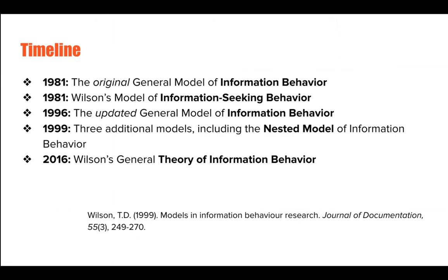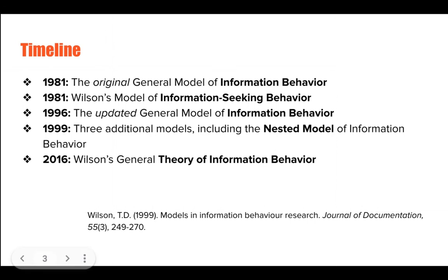Wilson has been continually developing multiple models related to information behavior, and it can get a little confusing if you aren't familiar with them already. In 1981, Wilson published the original general model of information behavior in the paper 'On User Studies and Information Needs,' and also published the model of information-seeking behavior, which is different. In 1996, he expanded and updated the general model of information behavior and, inconveniently, did not rename it. And in 1999, three additional models were added to Wilson's portfolio, including the nested model of information behavior, which we have already seen in the class.